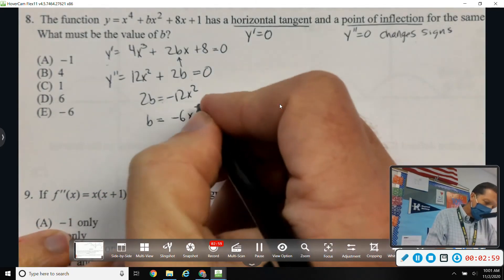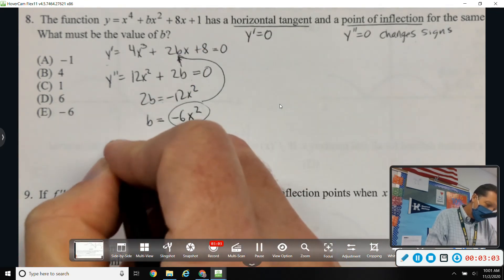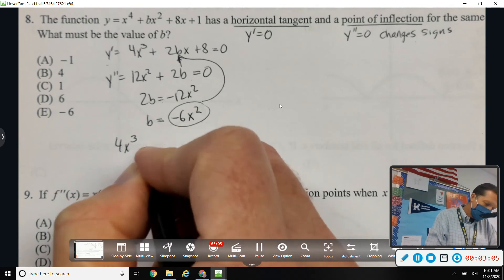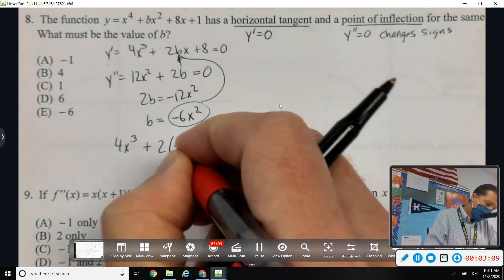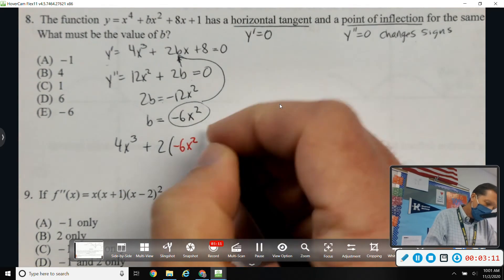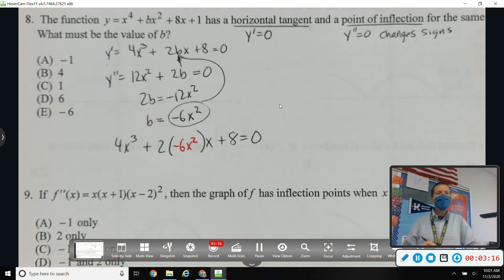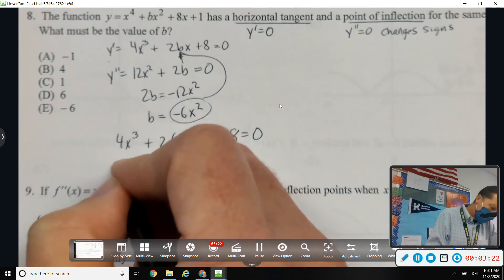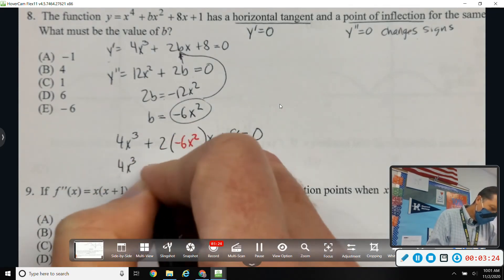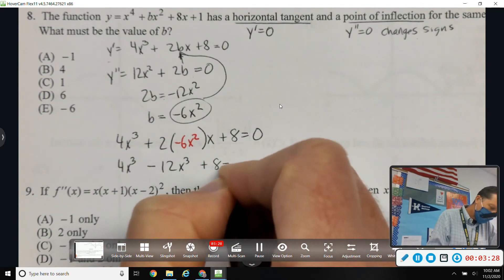So, let's take negative 6x squared and plug it in for b and see what happens. That's 4x cubed plus 2 times negative 6x squared times x plus 8 equals 0.